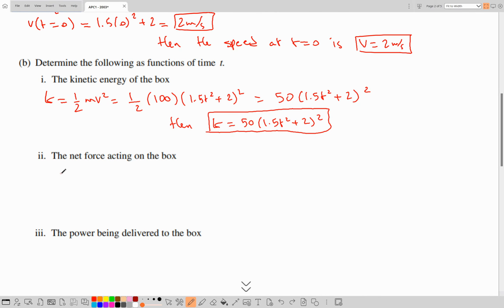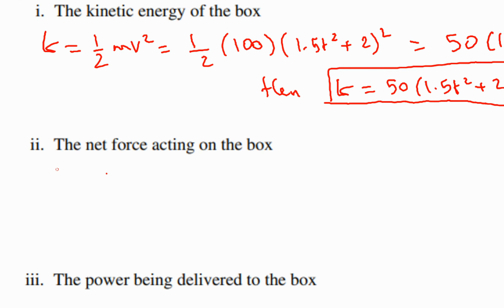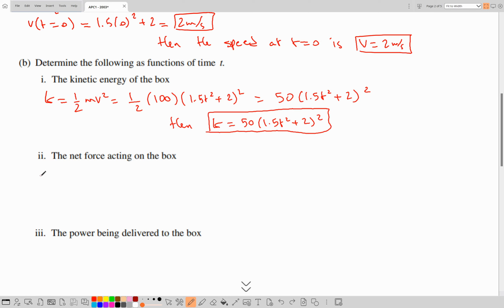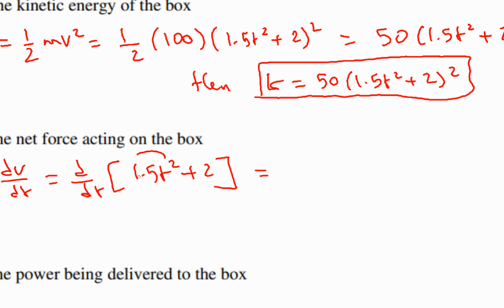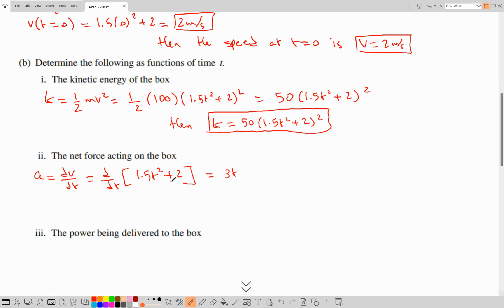In part B item 2, we determine the net force acting on the box. The net force is found using Newton's second law: F_net equals mA. Acceleration A is determined using calculus: A equals dv/dt, which is d/dt of (1.5t squared plus 2). The quadratic becomes linear: 2 times 1.5 equals 3t. The constant becomes 0. So F_net equals mA equals 100 times 3t equals 300t. No unit is placed.